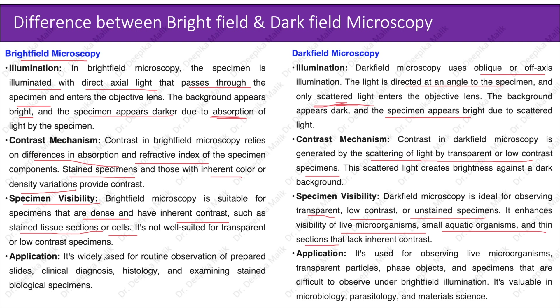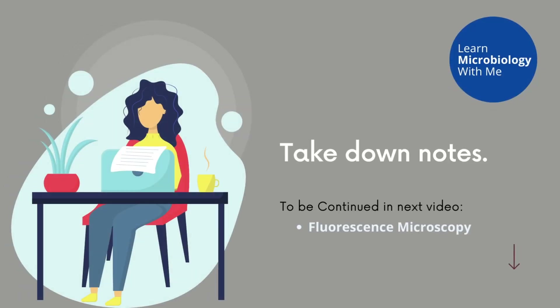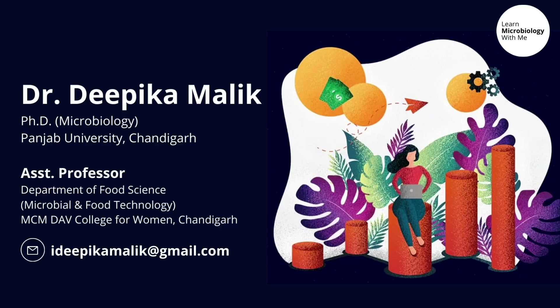Application: bright field microscopy is widely used for routine observation of prepared slides, clinical diagnosis, histology, and examining stained biological specimens. Dark field microscopy is used for observing live microorganisms, transparent particles, phase objects, and specimens that are difficult to observe under bright field illumination; it's valuable in microbiology, parasitology, and material sciences. In the next session we'll discuss fluorescence microscopy in detail. Thank you for watching; for any doubts or queries you can contact me through the given email.